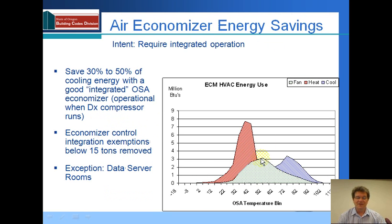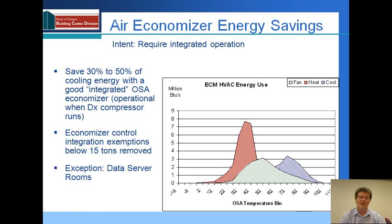As we look at the graph, we've taken a big chunk out of the cooling load, perhaps 30 to 50 percent, by using the outside air instead of the mechanical cooling when it is effective. In the new code, the economizer control integration exemptions that used to exist under 15 tons have been removed. There's an exception for data server rooms.